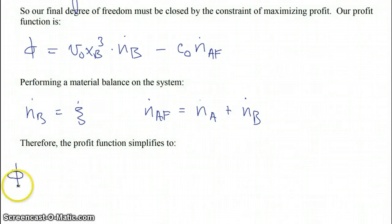And so now our profit function with our material balances in it simplifies to this parameter V0, which is the value of our product, times the molar flow rate of B over the molar flow rate of A coming in. Now note this quotient is going to be equal to XB, that cubed, times the molar flow rate of B being produced minus C0 times N dot A feed.